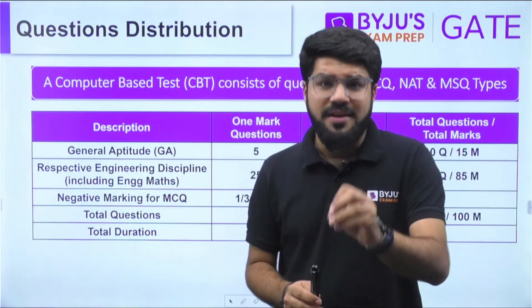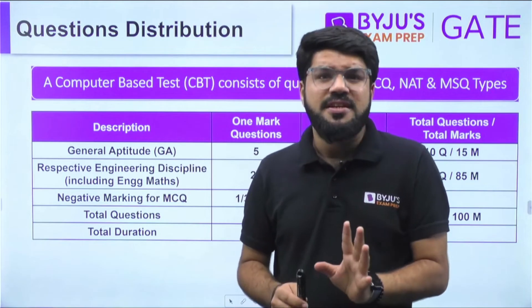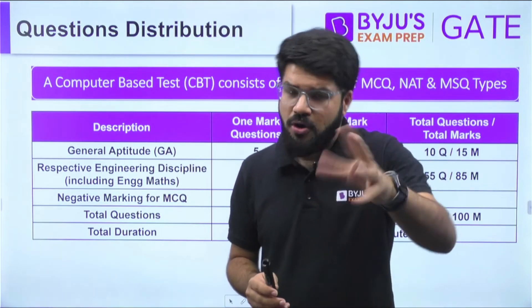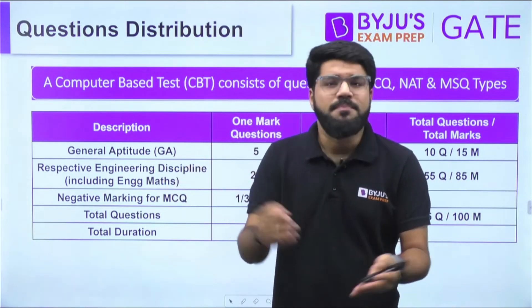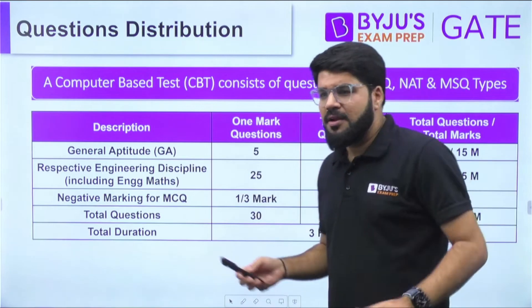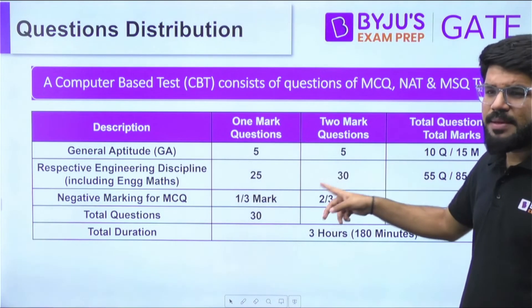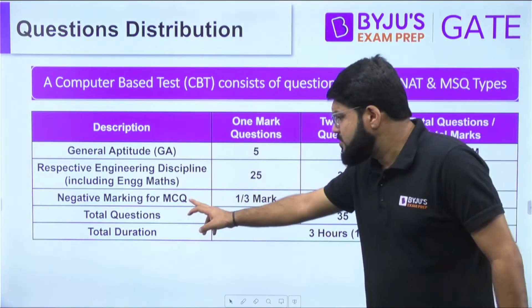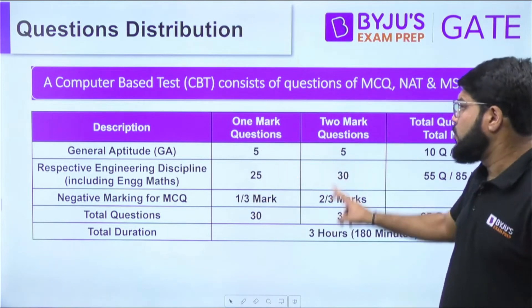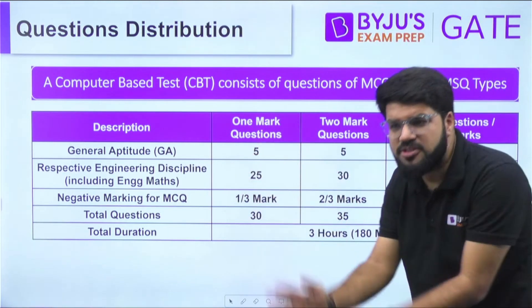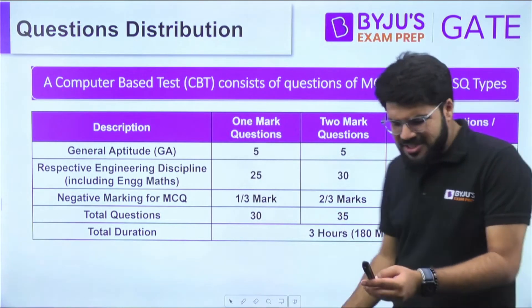Engineering Mathematics carries 13 marks. Generally the distribution is five one-mark questions and four two-mark questions — that gives 13 marks — though there can be deviations; this is an observation, not a fixed rule. Negative marking applies only to MCQ questions: one-third of one mark for one-mark questions, and two-thirds for two-mark questions. There is no negative marking for NAT or MSQ questions.